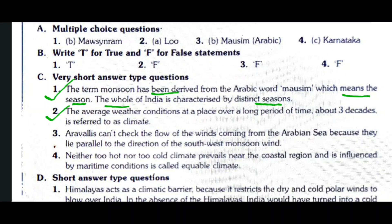Question number two: What is meant by climate? The average weather conditions at a place over a long period of time, about three decades, is referred to as climate. Question number three: What is meant by the term cycle of seasons? The Aravalli Hills cannot check the flow of winds coming from the Arabian Sea because they lie parallel to the direction of the southwest monsoon wind.